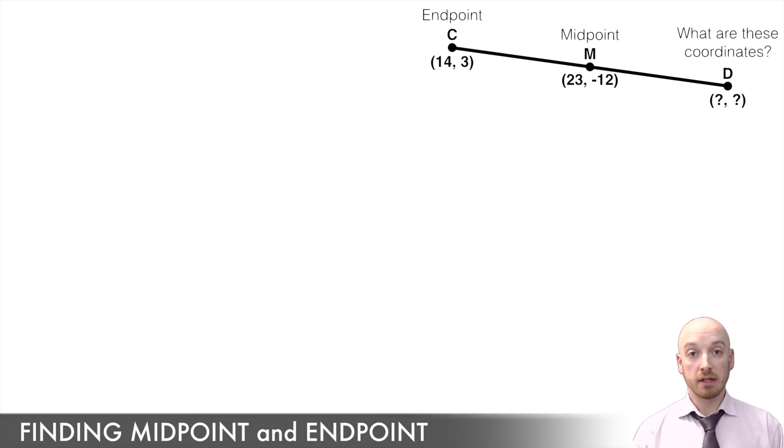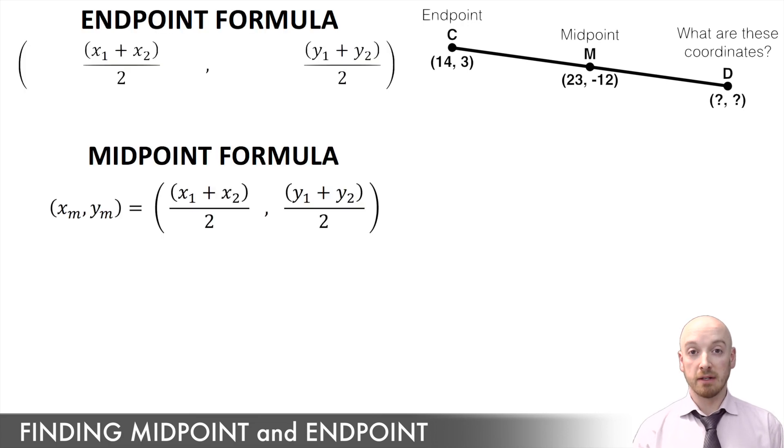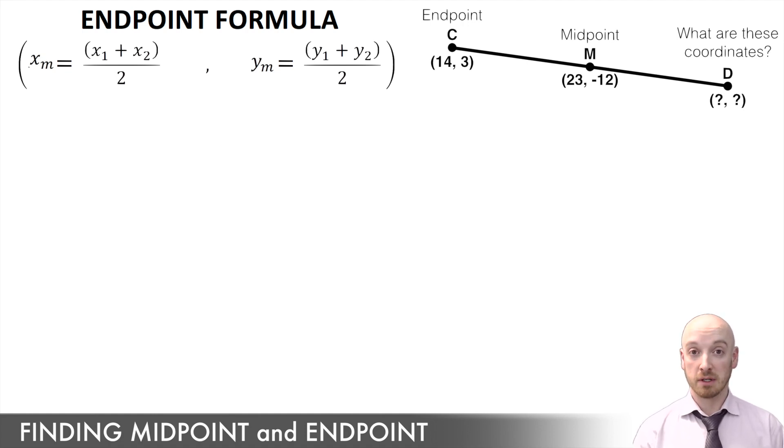Now we're actually using the exact same formula as we did to find the midpoint. But what we're going to do is write it a little bit differently. We're going to slide that xm and ym that represent x at the midpoint and y at the midpoint into the big set of brackets here. And to help us out here, we're actually going to call this one the endpoint formula. And even though it's done the same way, it's written a little bit differently and it's used for a different purpose. So we're going to write it separate from the midpoint formula.